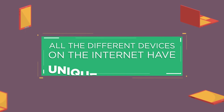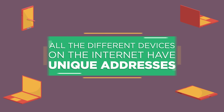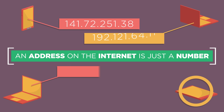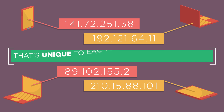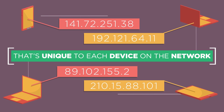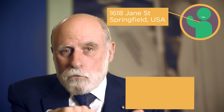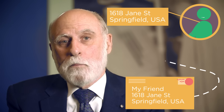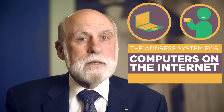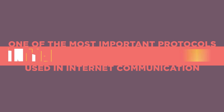All the different devices on the internet have unique addresses. An address on the internet is just a number, similar to a phone number or a street address, that's unique to each computer or device at the edge of the network. This is similar to how most homes and businesses have a mailing address. You don't need to know a person to send them a letter in the mail, but you do need to know their address and how to write it properly so the letter can be carried by the mail system to its destination. The addressing system for computers on the internet is similar, and it forms part of one of the most important protocols used in internet communication.